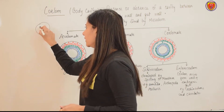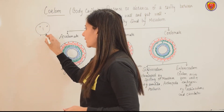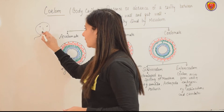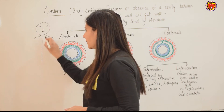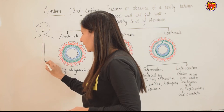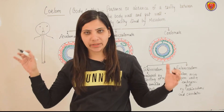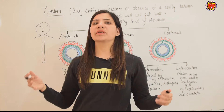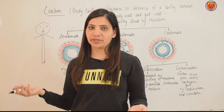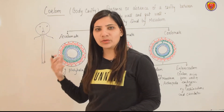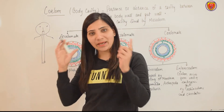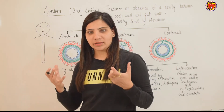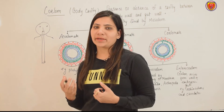Yeh body hai — kisi bhi human ki le lete hain. Yeh iska alimentary canal hai. Mouth to anus tak iska alimentary canal hai. Organs ko chod dete hain — kuch organ mesoderm se originated hote hain, kuch organ endoderm se originated hote hain, jo yahaan coelom mein present hain. Body cavity mein jo organ present hain, they may be originated by endoderm or ectoderm.